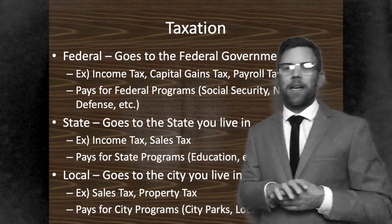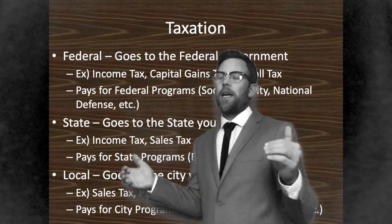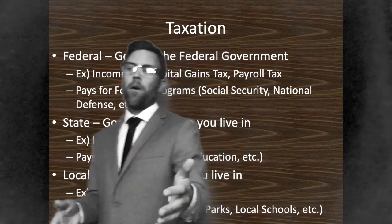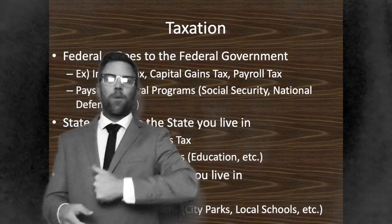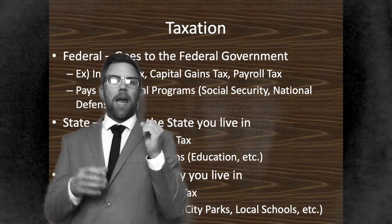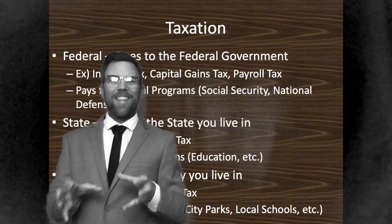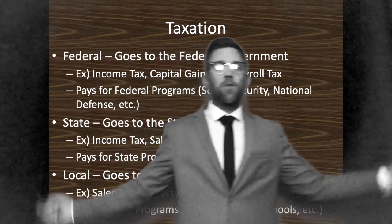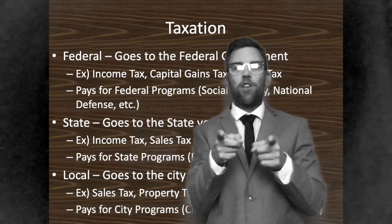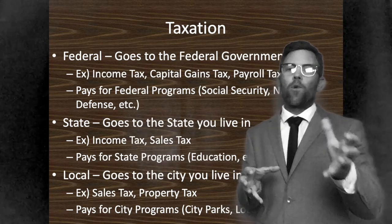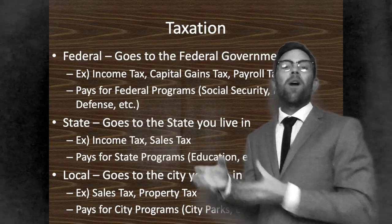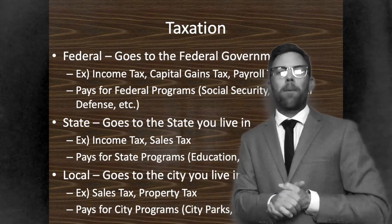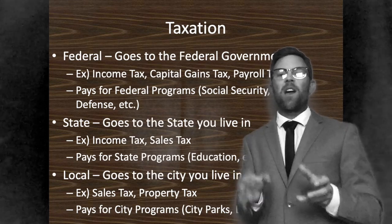The second level would be the state level — for us, that's California. The taxes we pay towards the state go towards state-funded programs. In California, we collect tax through income tax, sales tax, and a number of other things, and these pools of taxation pay for state-level things. The biggest state expenditure in California is education. The federal government does kick in some money, but the states front the vast majority of the cost.